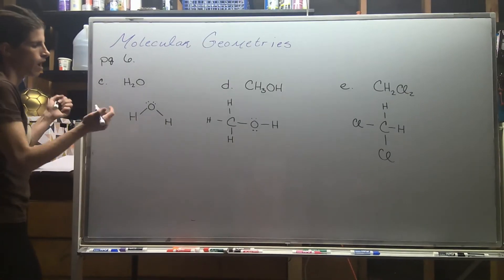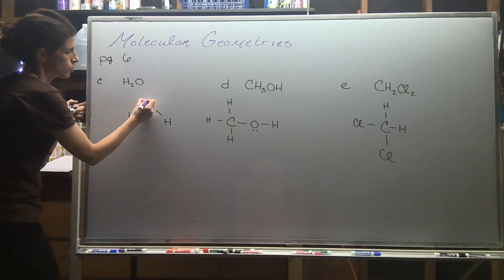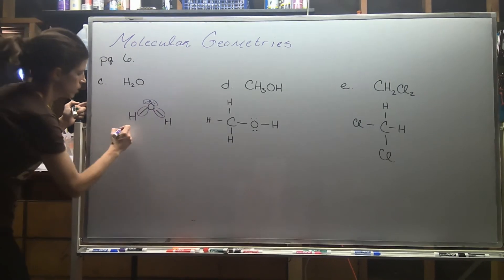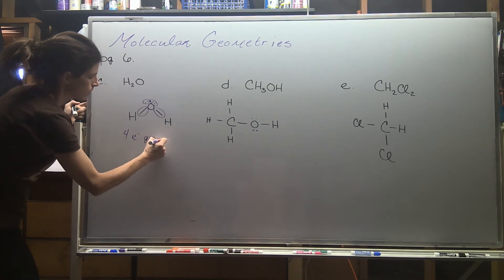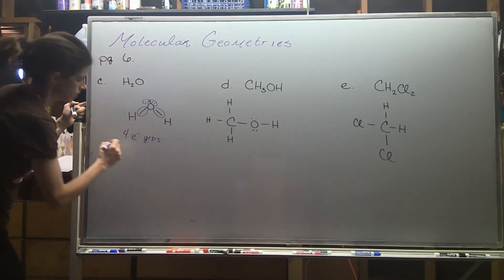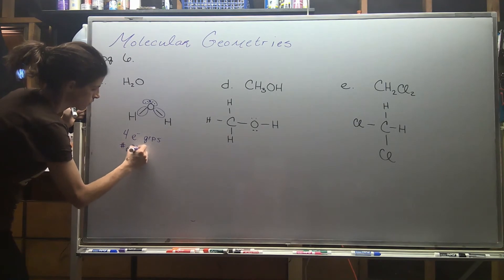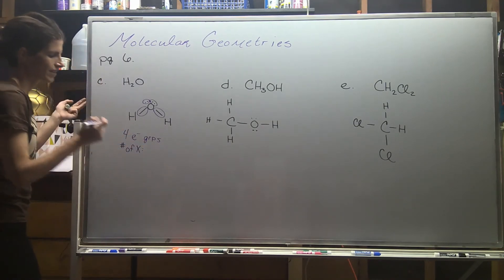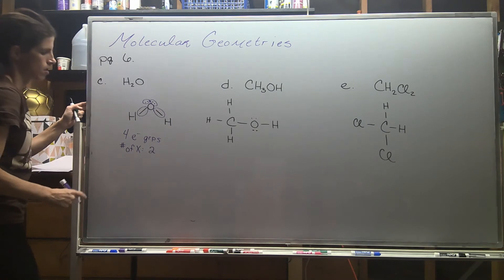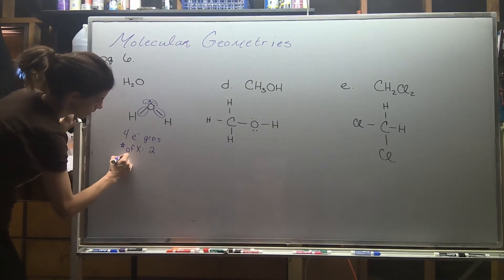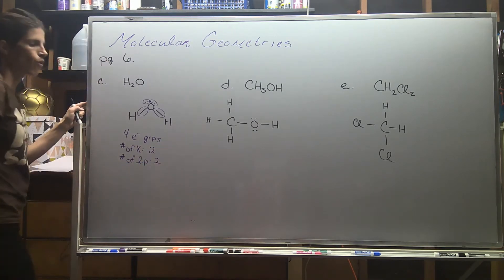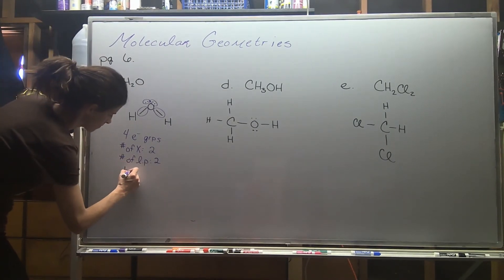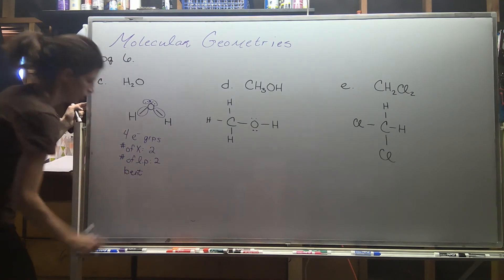Let's identify some more shapes. For water, oxygen is our central atom, so I'm just going to concern myself with what's going on around the central atom. I have four electron groups: two of them are bonds — two X's, which are the hydrogens — and then two lone pairs. A 4-2-2 combination gives us a bent molecular geometry.